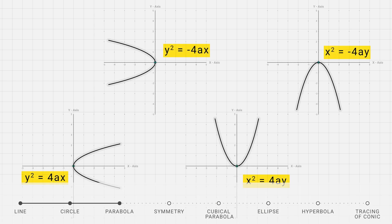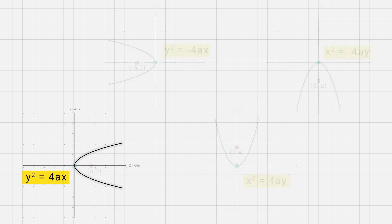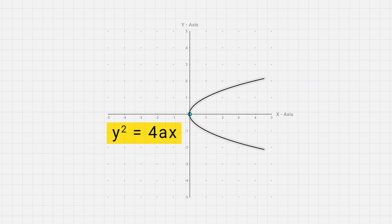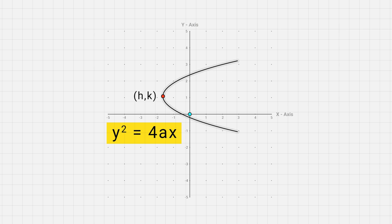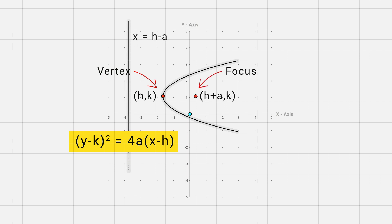There are 4 basic parabolas, all having the same vertex at the origin. The focus is at (a, 0) or (minus a, 0) for the right-hand and left-hand side parabolas, and at (0, a) and (0, minus a) for the other two. If we shift the vertex of the parabola to point (h, k), the equation becomes (y minus k) whole square equal to 4a times (x minus h), where h and k are the vertex. The focus and directrix become (h plus a, k) and x equal to h minus a.